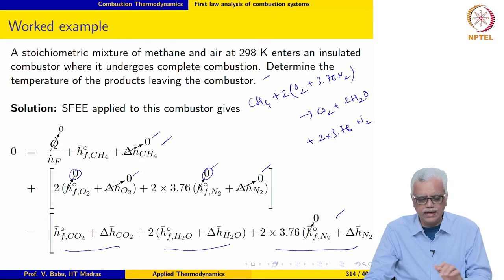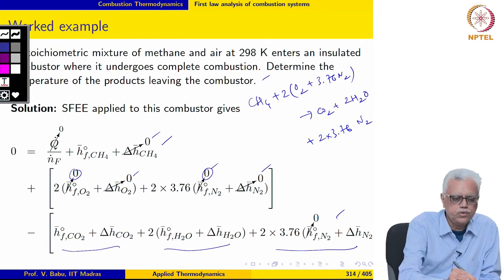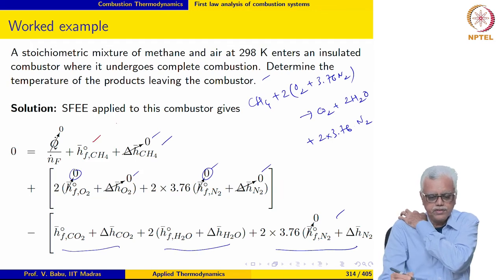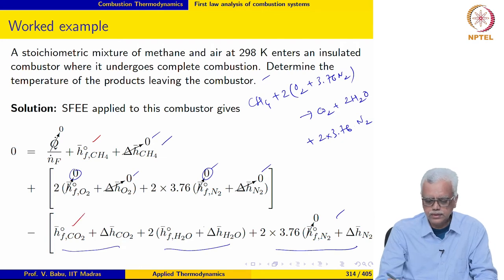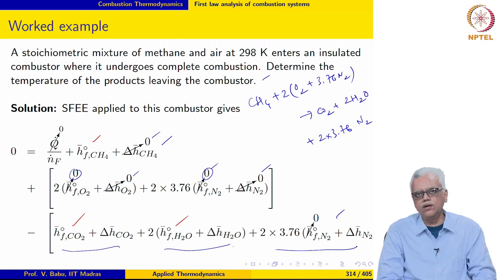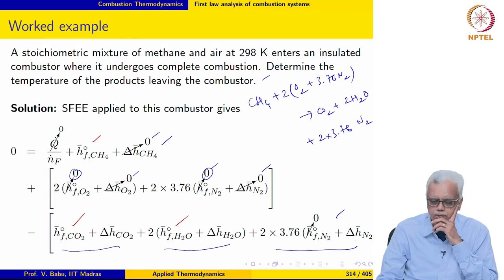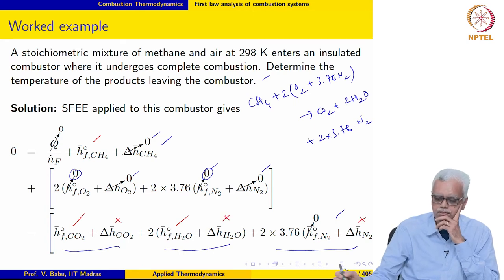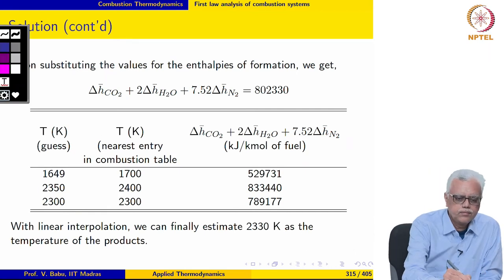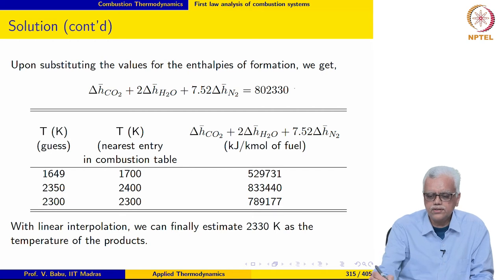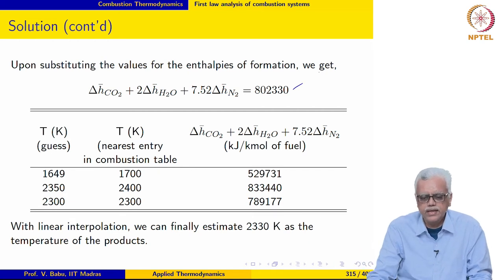Substituting known values — the enthalpies of formation are all known, given in the problem statement — on the product side we have the sum of enthalpies of CO₂, H₂O, and N₂. The sensible enthalpy on the product side is not known because the exit temperature is not known. So delta H̄ of CO₂, delta H̄ of H₂O, and delta H̄ of N₂ are not known since the temperature is not known. Gathering the unknown quantities on the left-hand side gives an expression whose temperature must be determined iteratively.